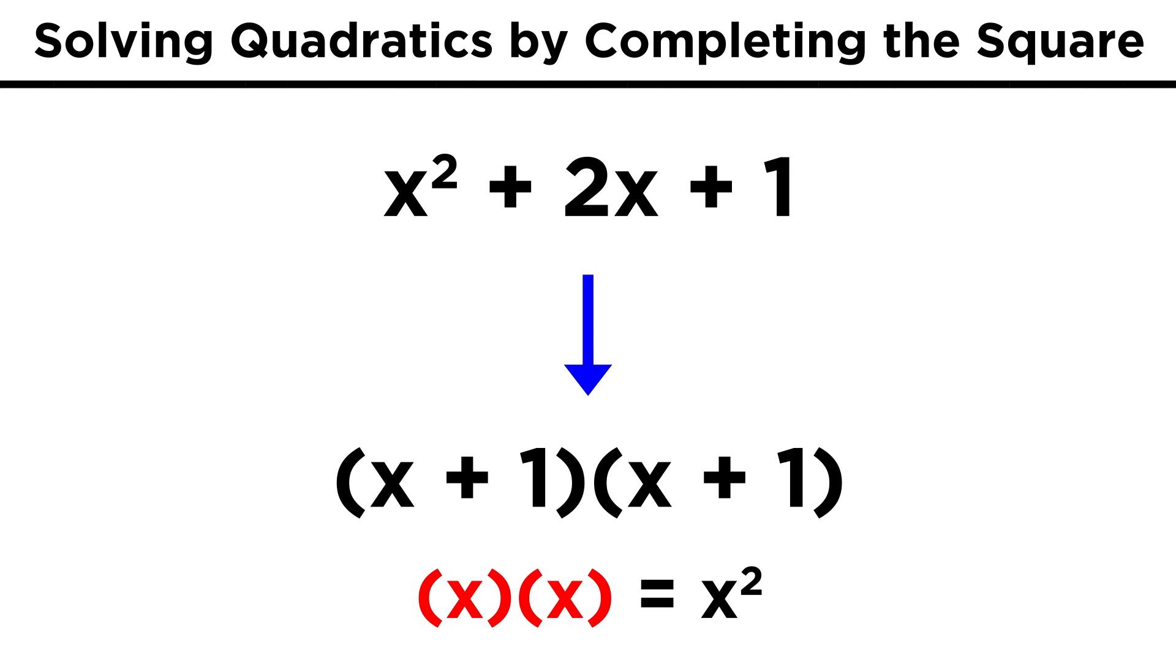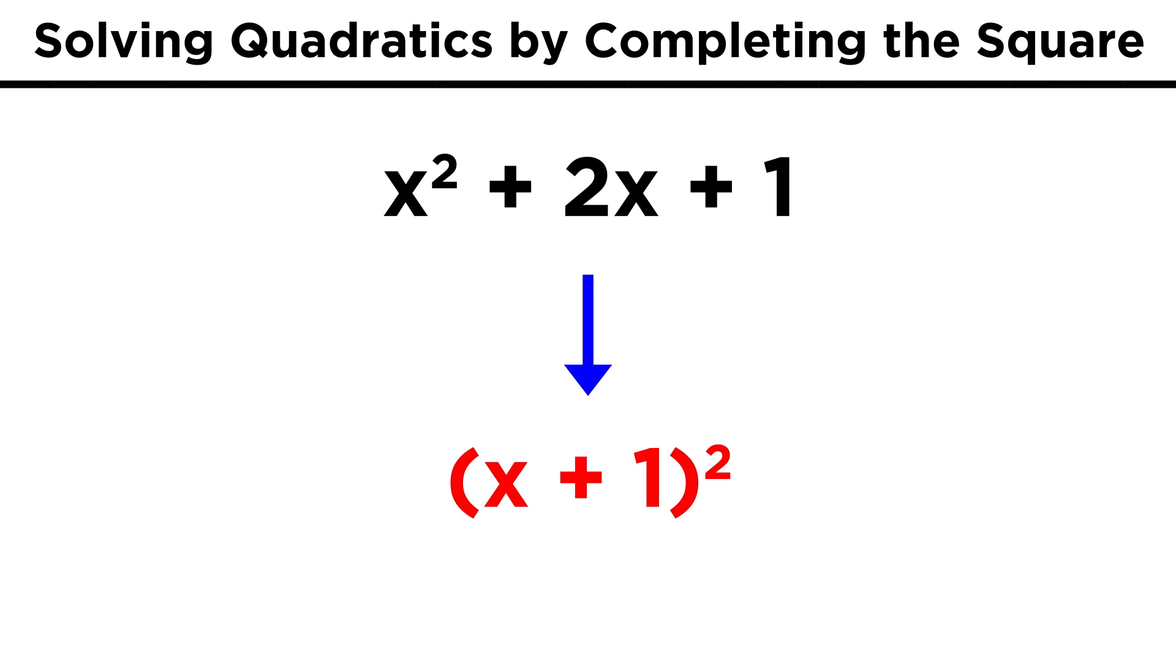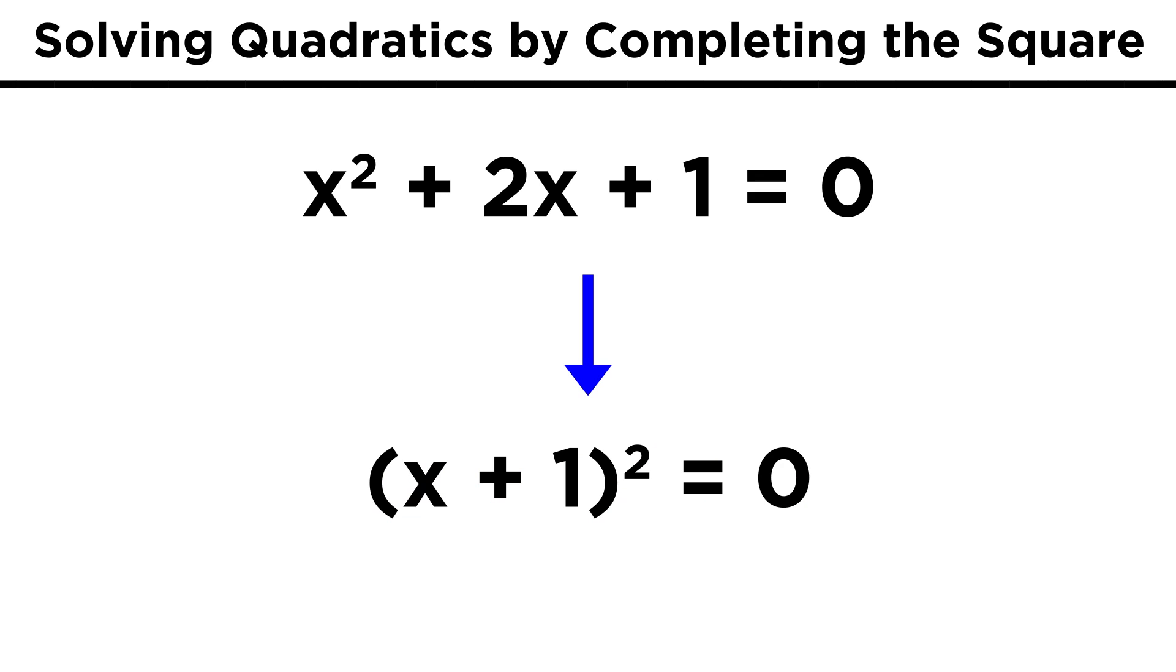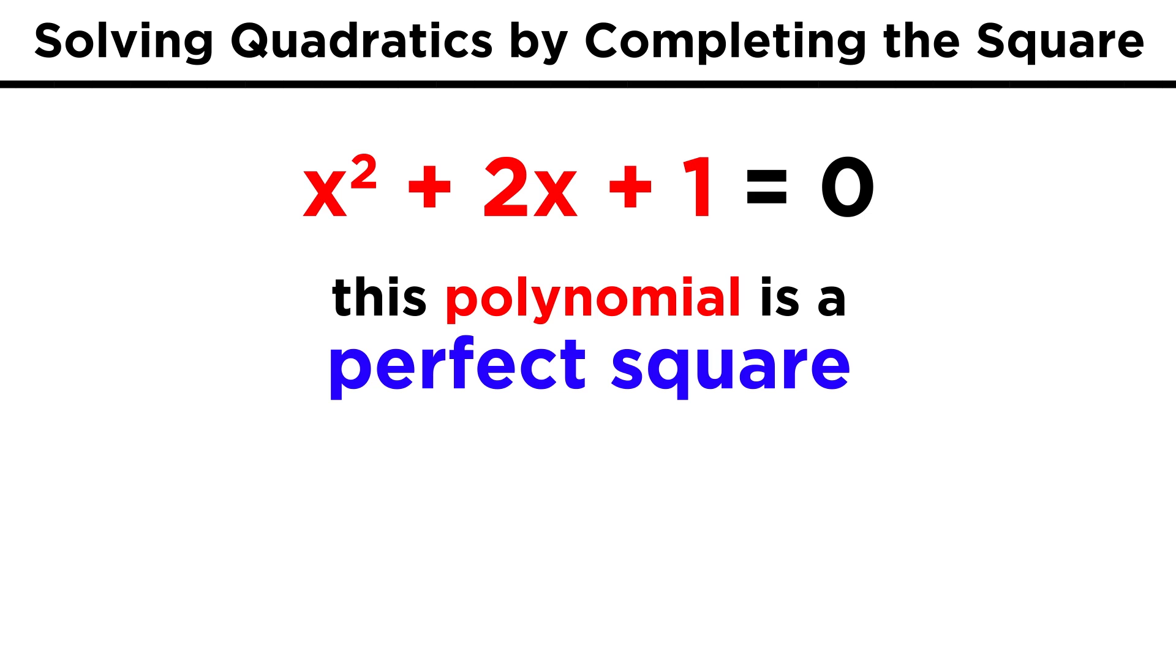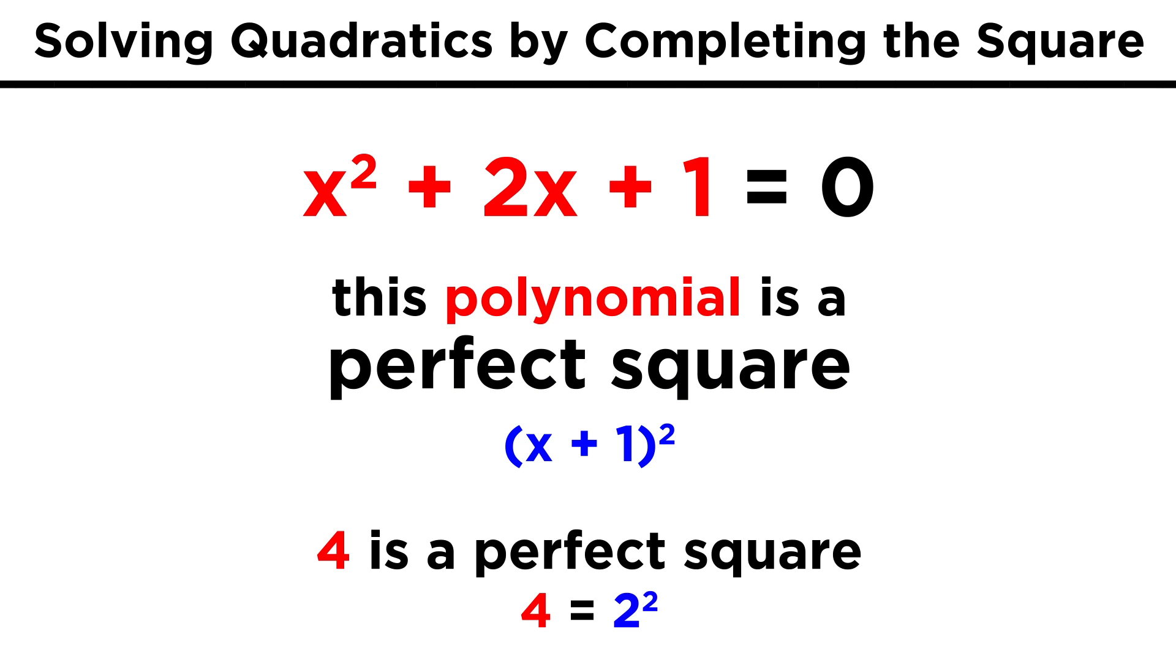Anything times itself is by definition that thing squared, so we can also express this as x plus 1 quantity squared. If this were equal to zero, the solution is very simple. It's just negative 1, because that's the value for x that will make this equal to zero. So the original polynomial must be a perfect square, since it can be generated by squaring this binomial, just like how 4 is a perfect square because it's 2 squared.